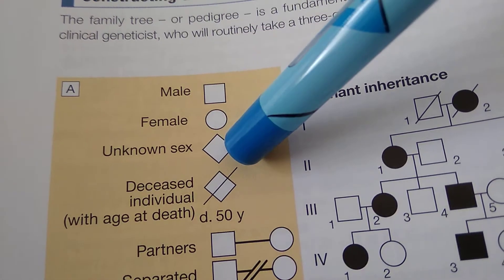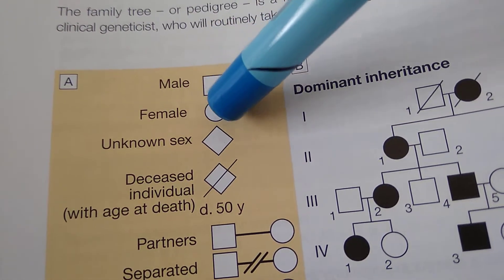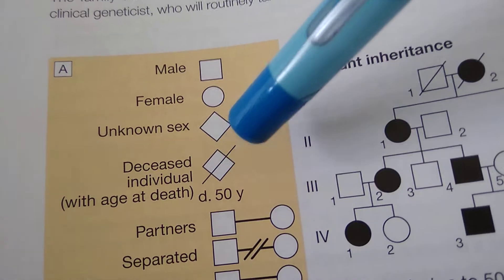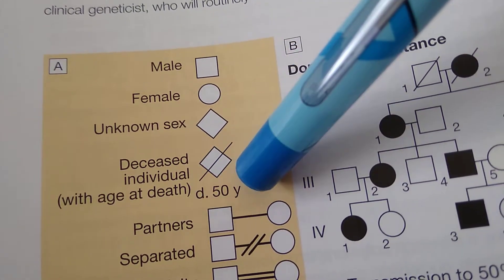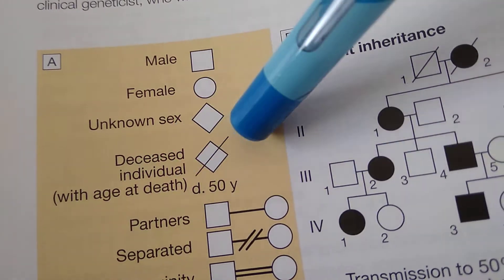Unknown sex will be a diamond, so neither a square nor a circle. If the person is dead, put a line and below you can see 'd' at which age. So if the person has one line like this, the person is dead.